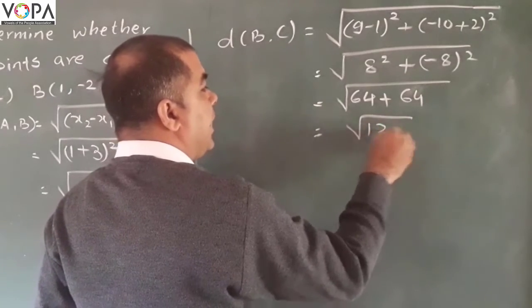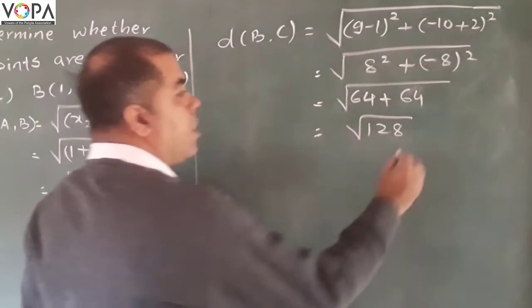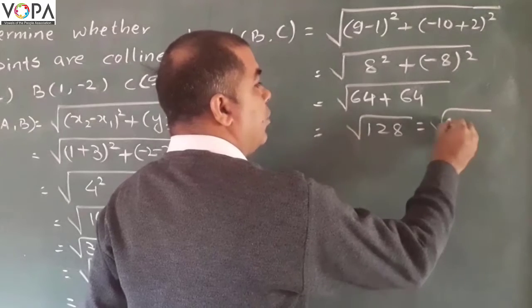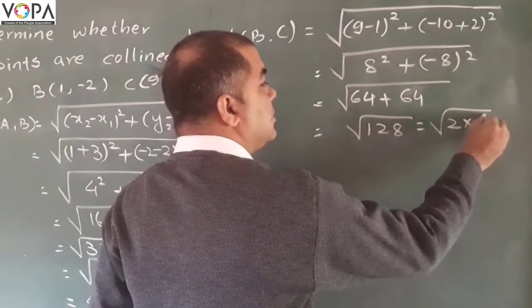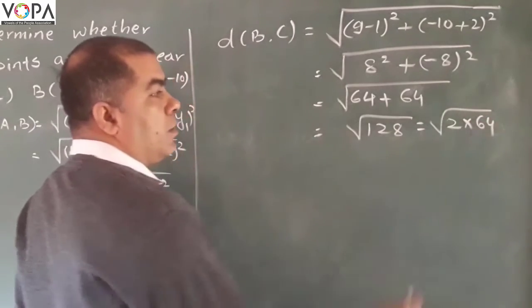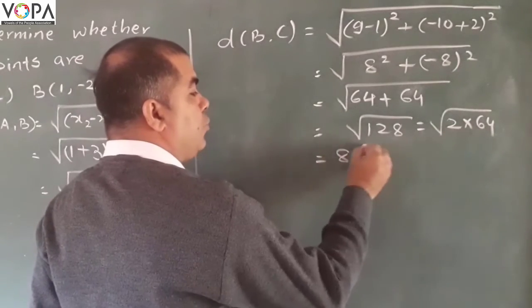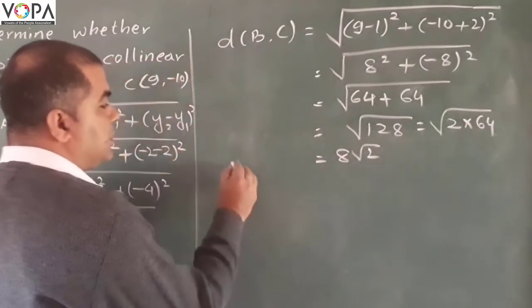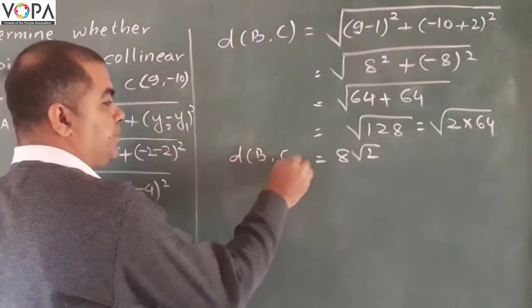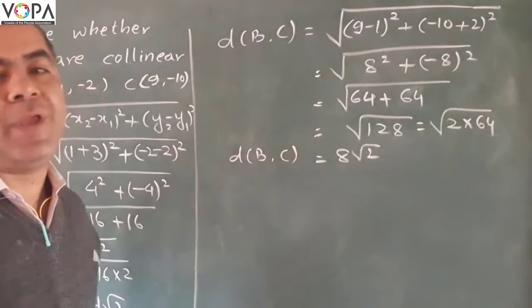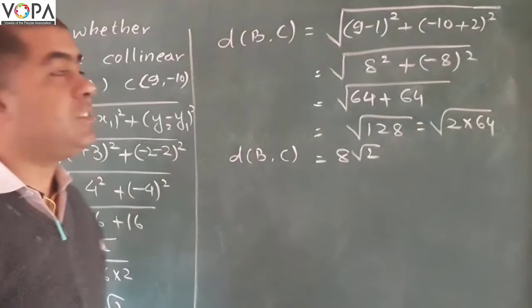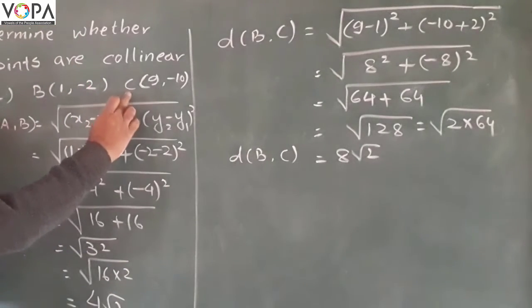It will be 128. Now write it as 2 multiplied by 64. The square root of 64 is 8 and root 2 as it is. This is the distance BC. In this way, find the distance, that is the last distance AC.